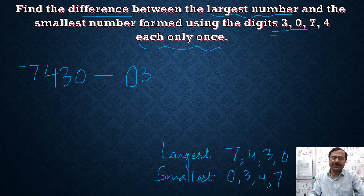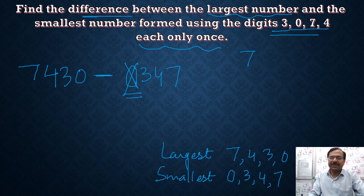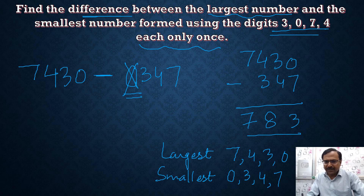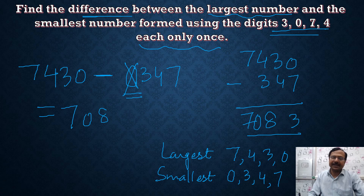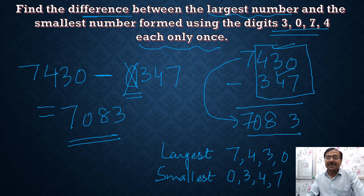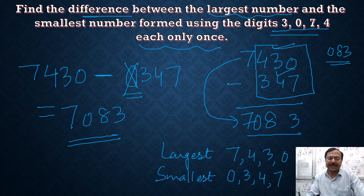So all we have to do is subtract 347 from 7430. 7000 is obvious, and subtracting 347 from 430 gives us 083. So the final answer is 7083. There was a slight hiccup in the calculation because 430 minus 347 equals 083, and you need to be careful there. So 7083 is the correct answer to this question.